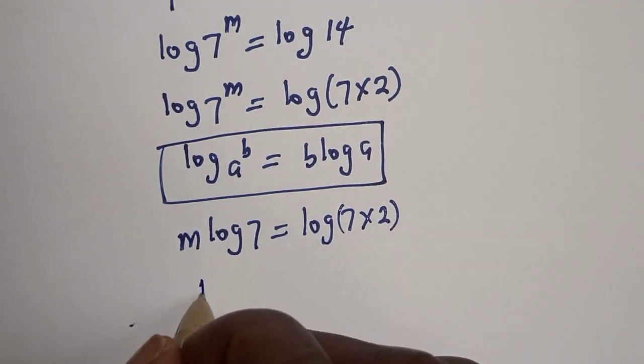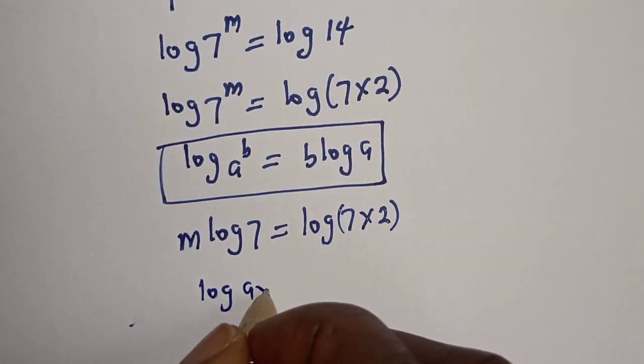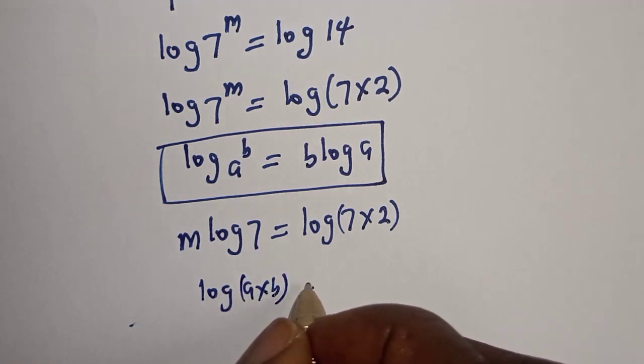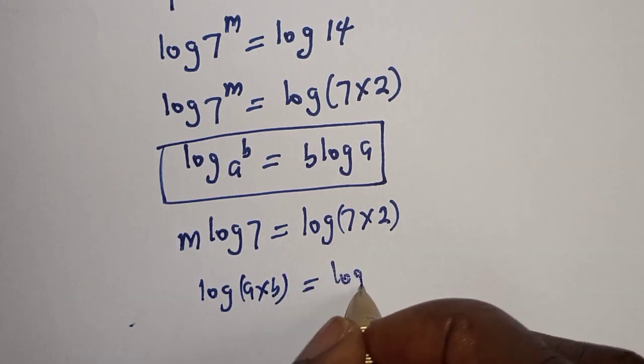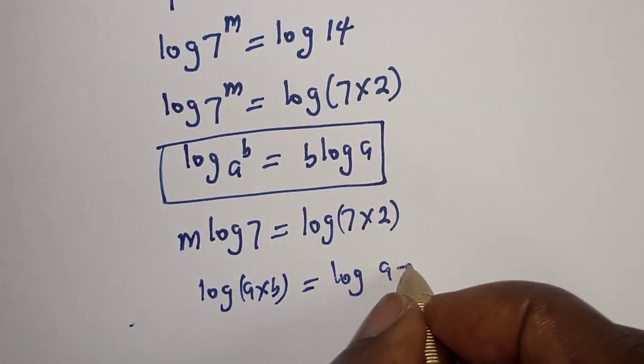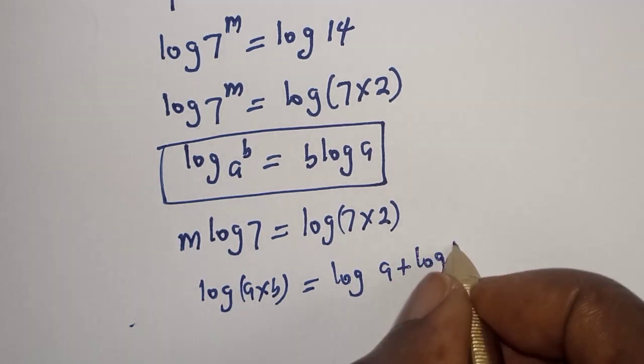Now, if you have log a multiplied by b, this is equal to log a plus log b.